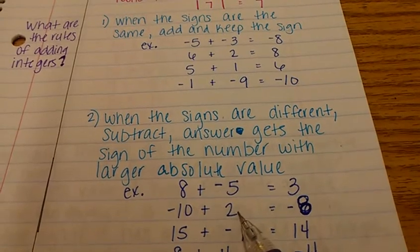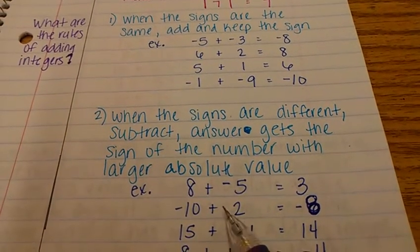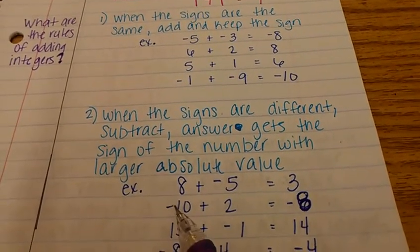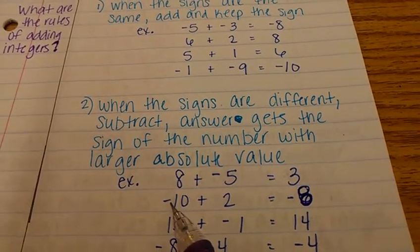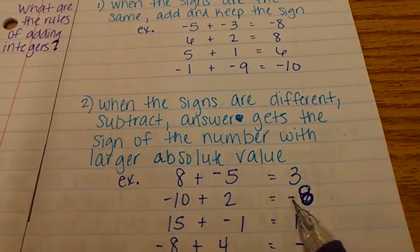Negative ten plus two. Negative and a positive, we got to subtract. That's eight. But because ten is a larger number, it has a larger absolute value, our answer is negative.